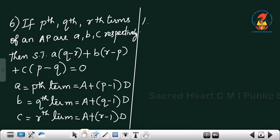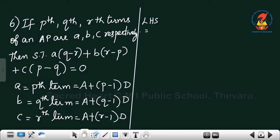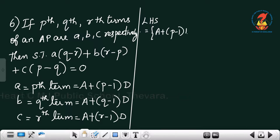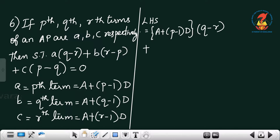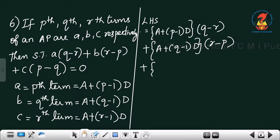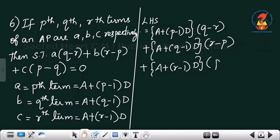We take the LHS: a(q minus r) plus b(r minus p) plus c(p minus q). Substituting: [A plus (p minus 1)d](q minus r) plus [A plus (q minus 1)d](r minus p) plus [A plus (r minus 1)d](p minus q).